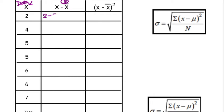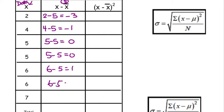So I'm going to say 2 minus 5 is negative 3. Then 4 minus 5 is negative 1. 5 minus 5 is 0. 5 minus 5 is 0. 6 minus 5 is 1. 6 minus 5 is 1. 7 minus 5 is 2. All right, so we've taken each of the data values and subtracted it from its mean.